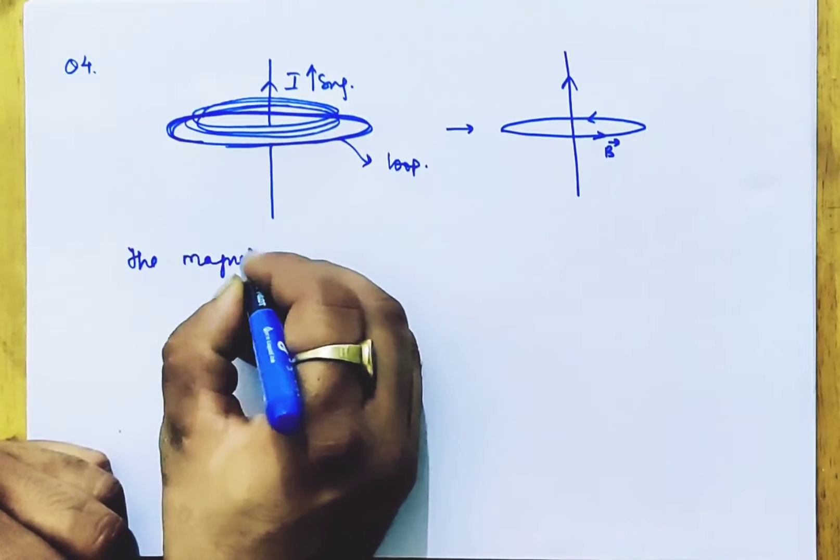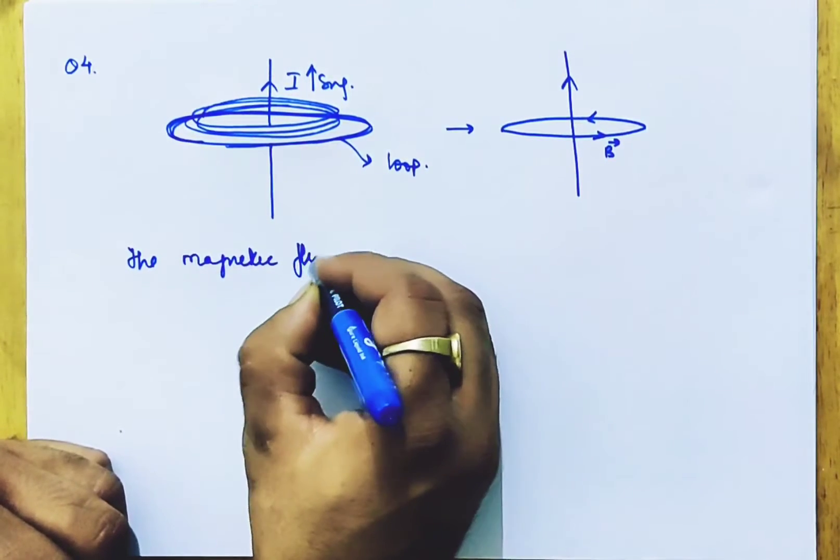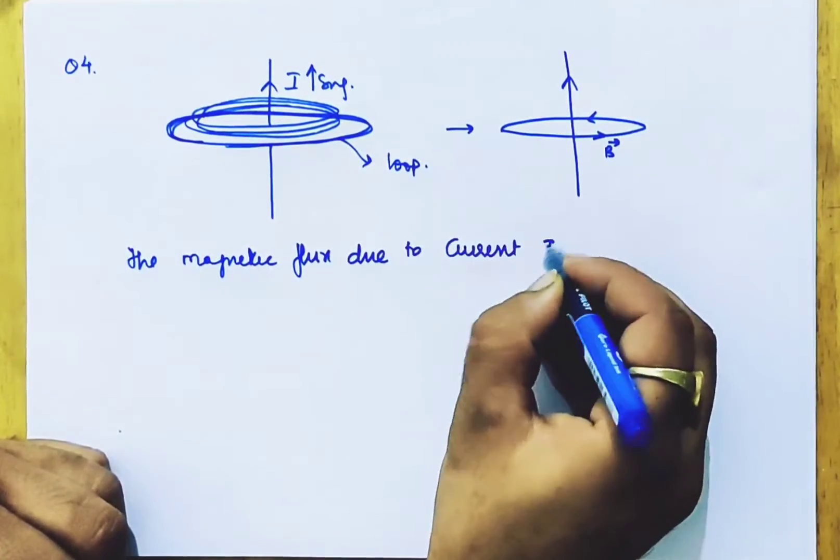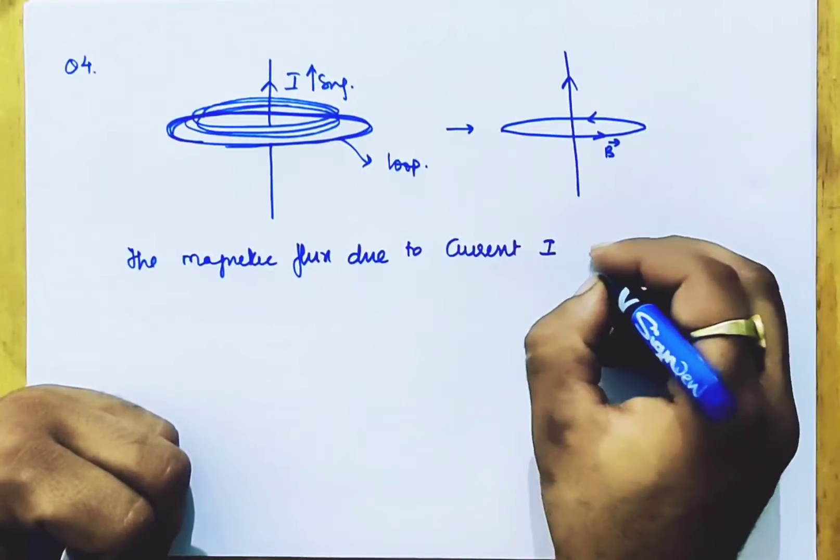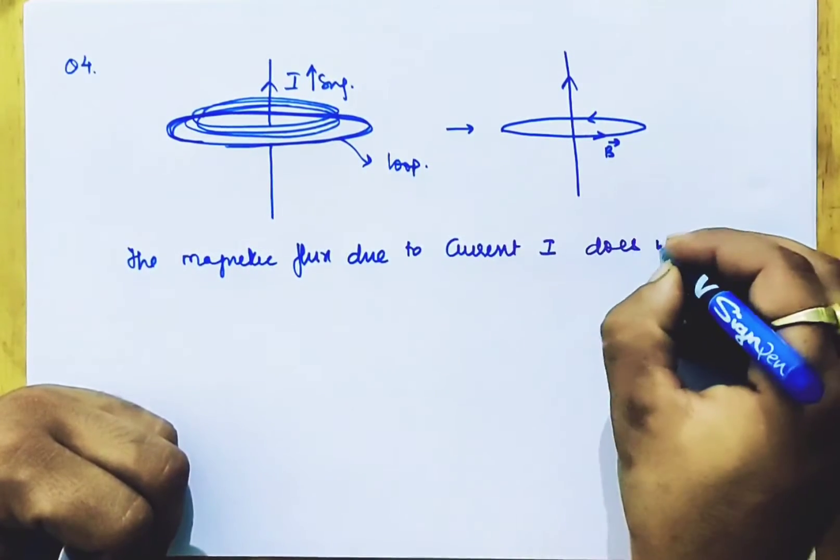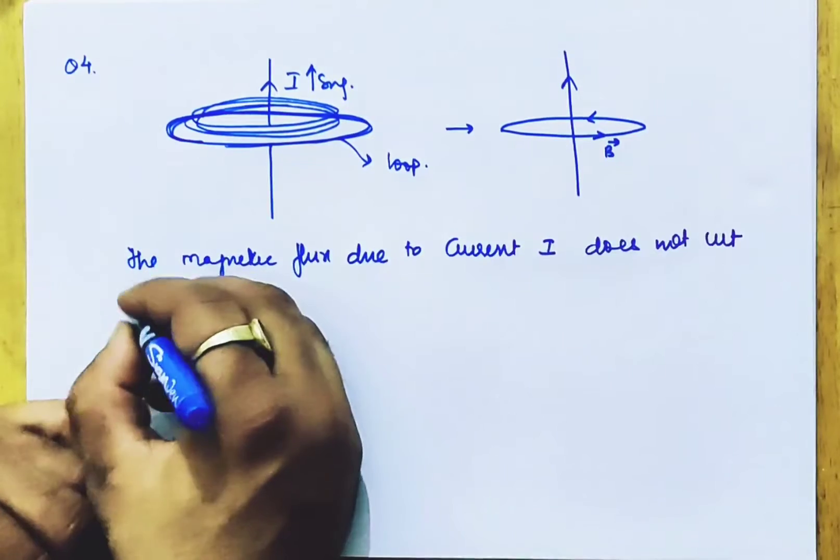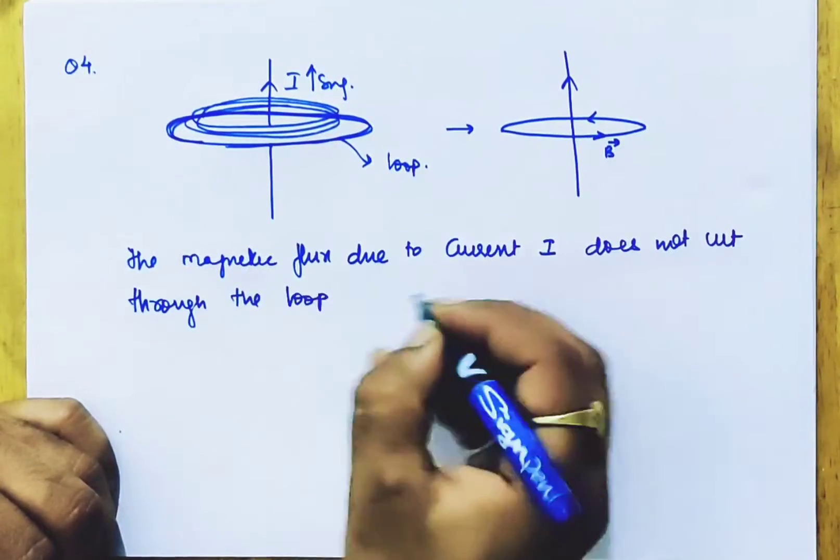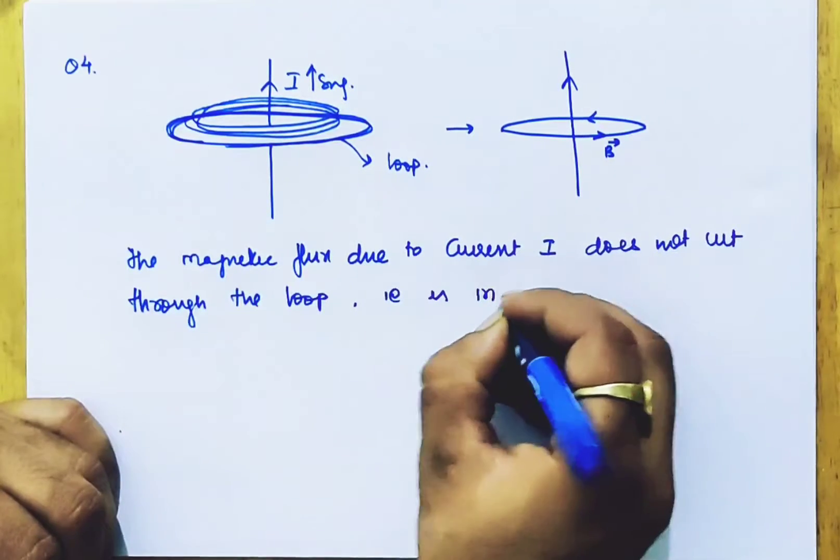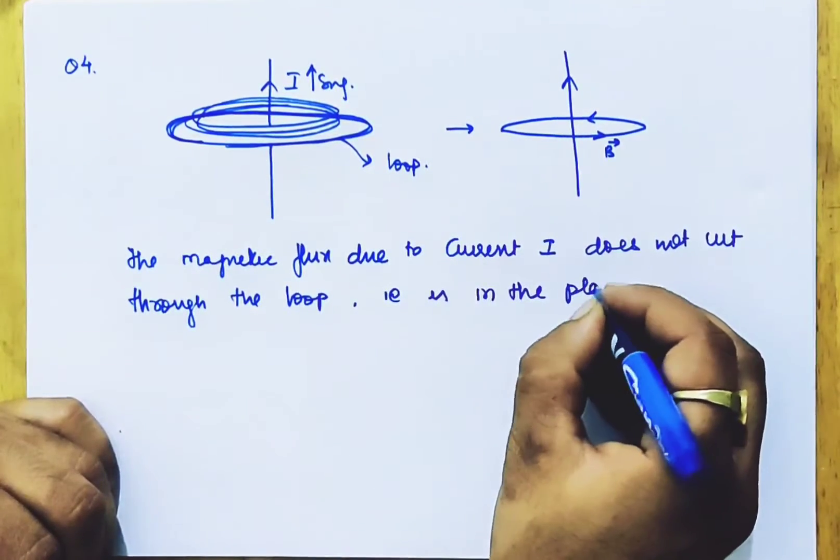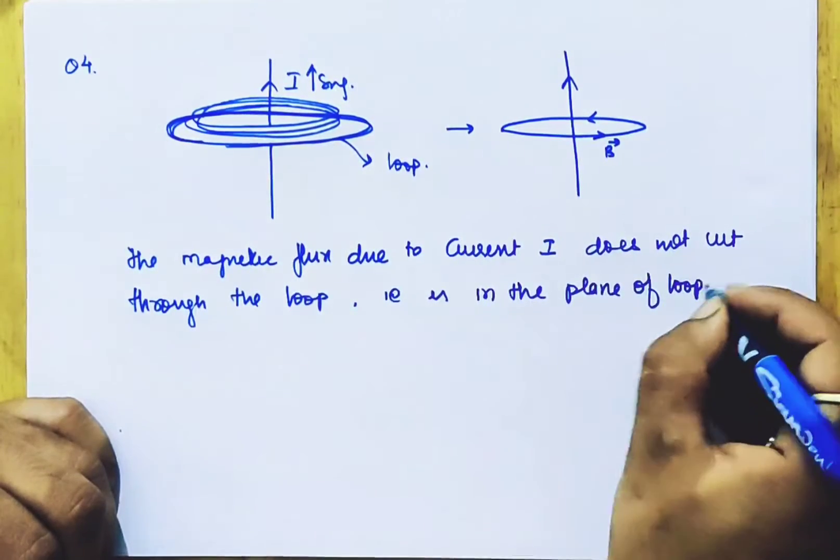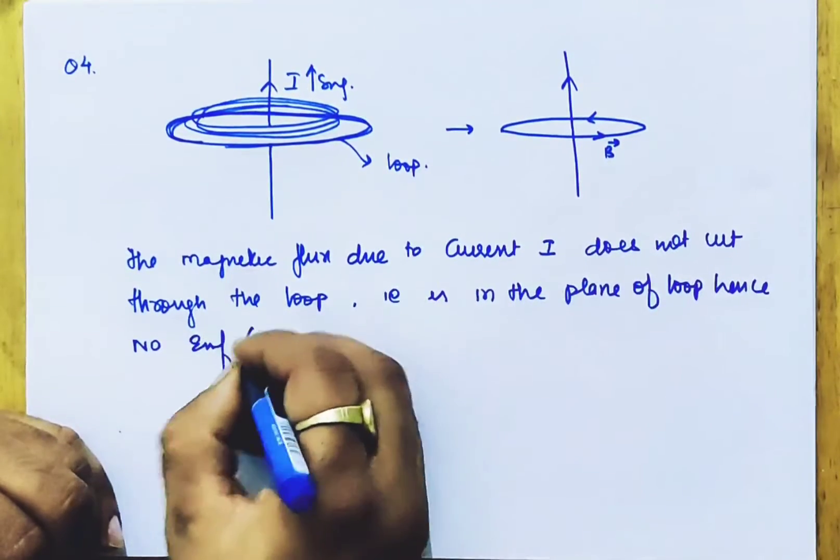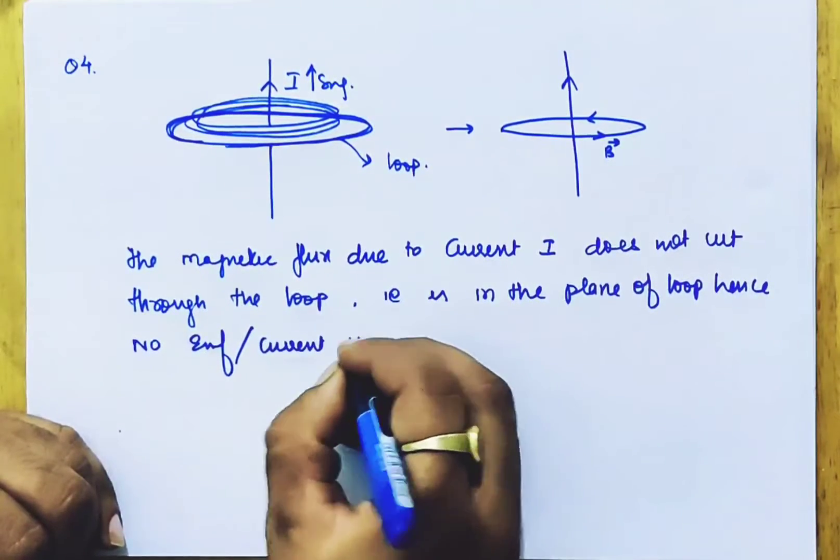The magnetic flux due to current I does not cut through the loop. That is, it is in the plane of the loop. Hence, no EMF or current is induced.